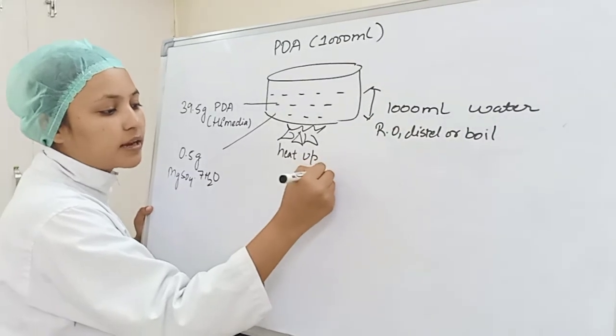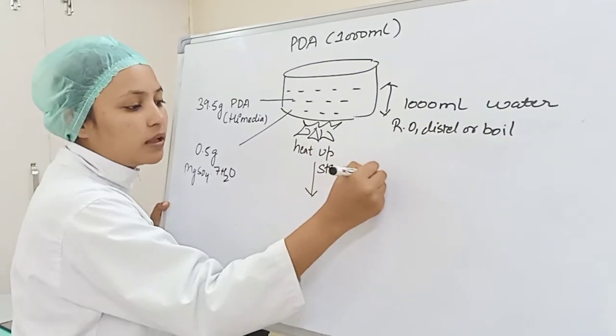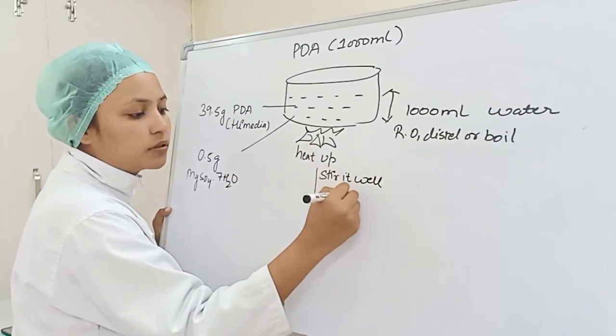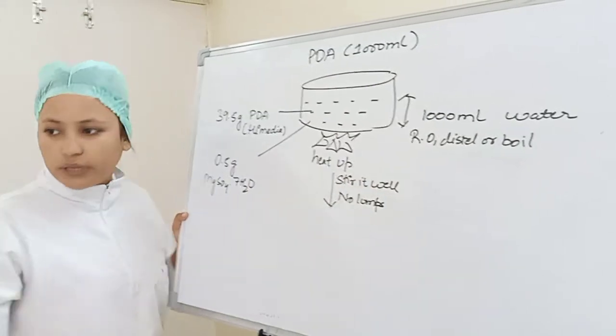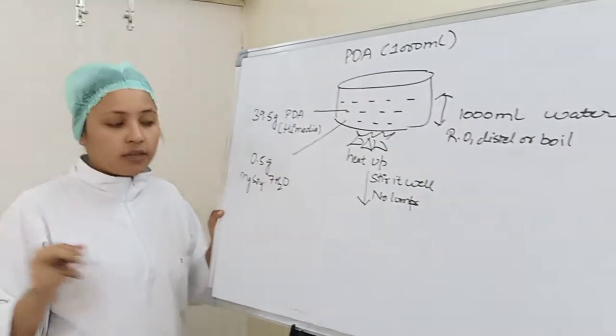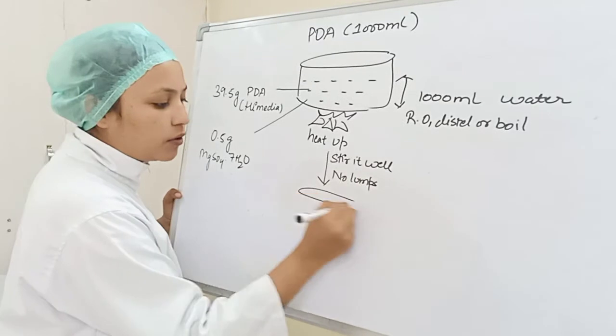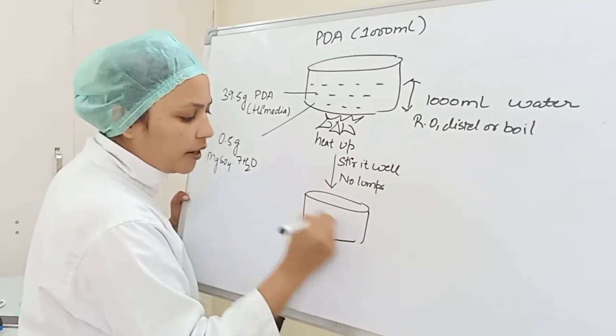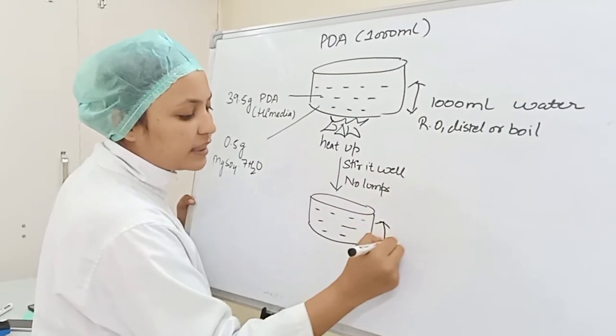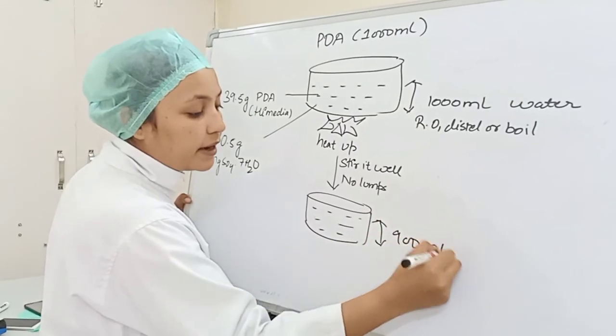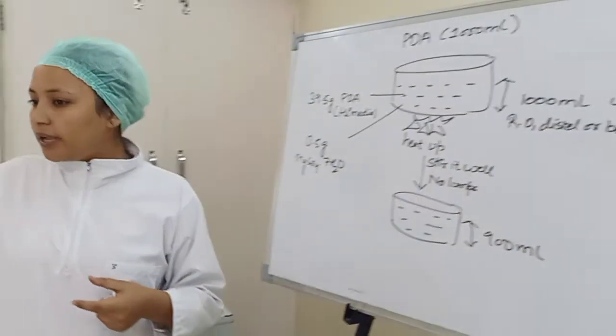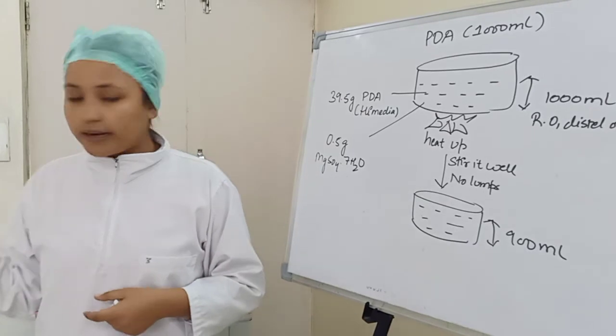After this, we will mix it well and there should be no lumps. Then you will see that PDA is ready, but this is something around 900 ml because 100 ml is evaporated after boiling water.